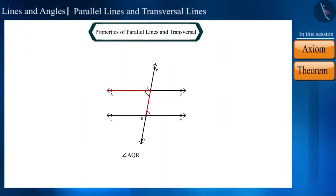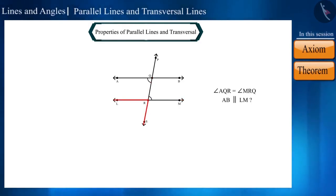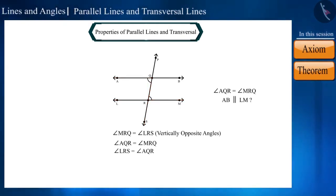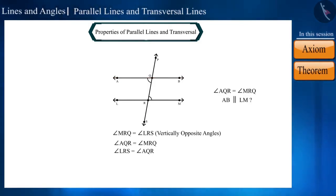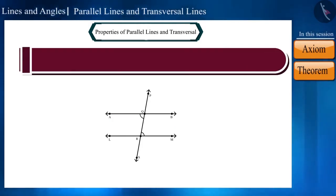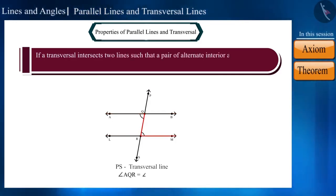Can we call two lines parallel if the alternate interior angles are equal? Let's look at the figure. Both these angles are vertically opposite angles. Therefore, angle MRQ and angle LRS will be equal. And we have been given that these two angles are equal. From these two statements, we can draw the conclusion that both these angles are equal — kindly note, these two angles are corresponding angles. Using the converse of corresponding angles axiom, we can prove that lines AB and LM are parallel lines. We can write this result also in the form of a theorem: if a transversal intersects two lines such that a pair of alternate interior angles is equal, then the two lines are parallel.